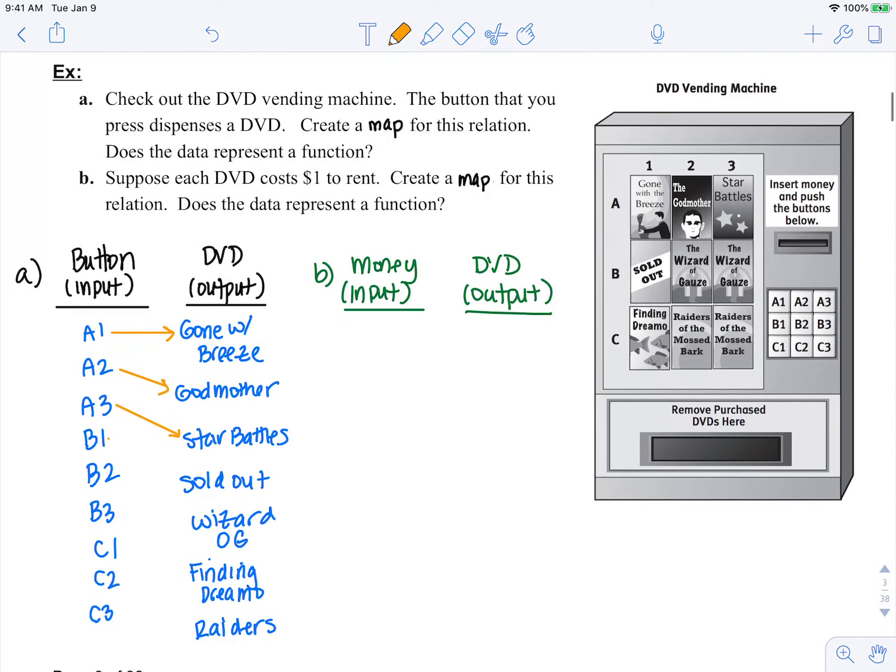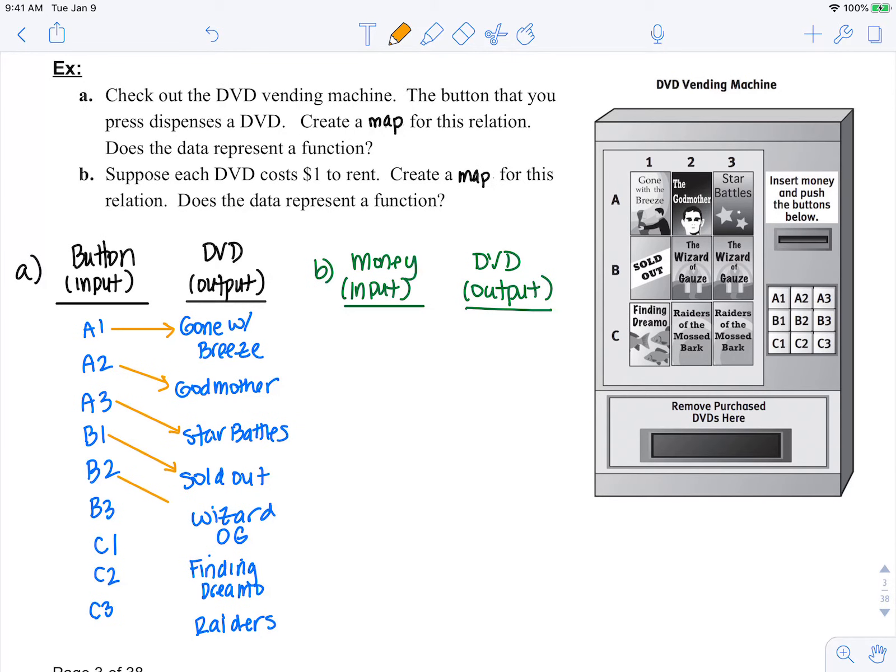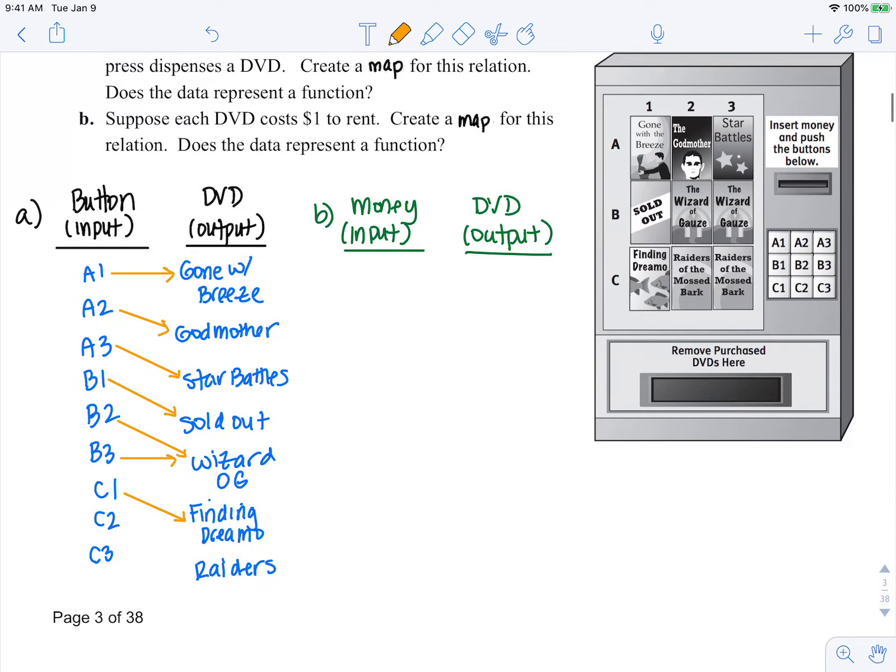B1 maps to sold out. B2 maps to wizard of gauze. B3 also only maps to wizard of gauze. C1 is finding dreamo. And C2 and C3 both map to raiders of mossed bark. So we can see every single input only has